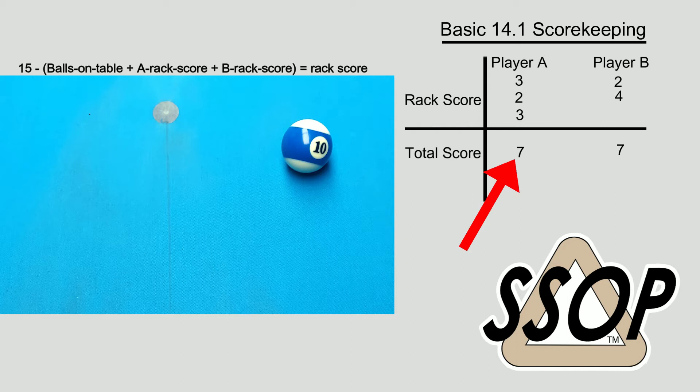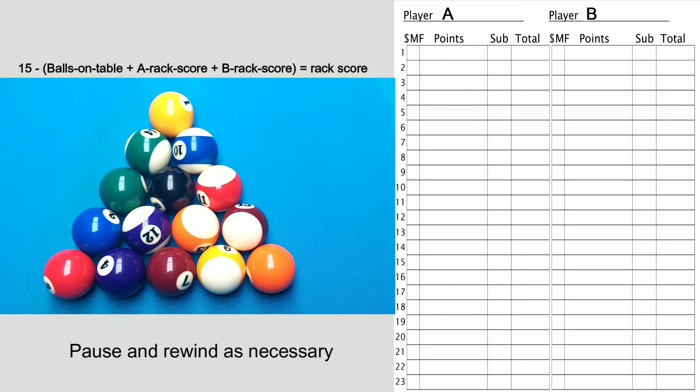Now, let's keep score of an example game using the Denver Straight Pool League score sheet. Each line on the score sheet represents one inning or one turn at the table for each player. There are four columns for each player: how the inning ended (a scratch, miss, or foul), the number of points scored during that inning, the subtotal if they scored more than 14 points, and the running total for that game.